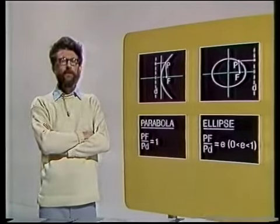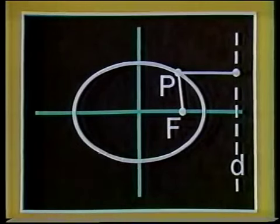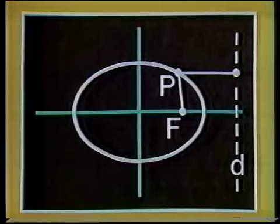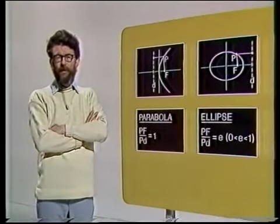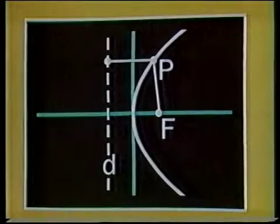To prove that a certain curve is an ellipse, we have to show something quite precise. To be an ellipse, it isn't enough for a curve just to have roughly the right oval kind of shape. An ellipse is defined in a special way, as you know from the text, and we're going to have to show that our light image curve satisfies this definition. So let me begin by reminding you of the definition — in fact, of all three kinds of curve: the parabola, the ellipse, and the hyperbola.